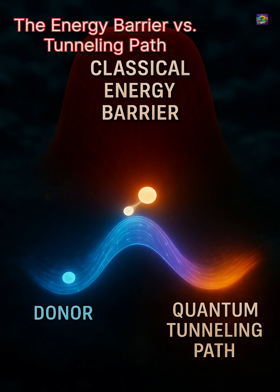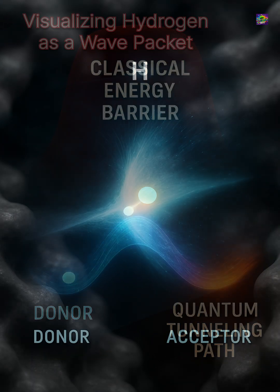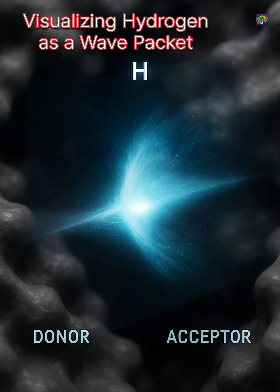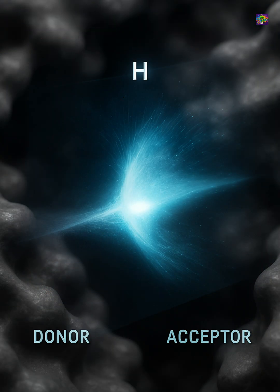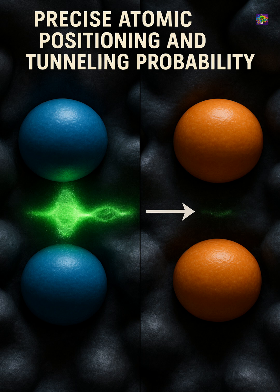This happens especially in cases where a tiny hydrogen atom must move from one place to another. The distance is often too large for it to cross by normal thermal energy, yet the reaction still completes quickly. The reason is quantum tunneling. Instead of climbing over the energy barrier, the hydrogen can pass through it by behaving like a wave.